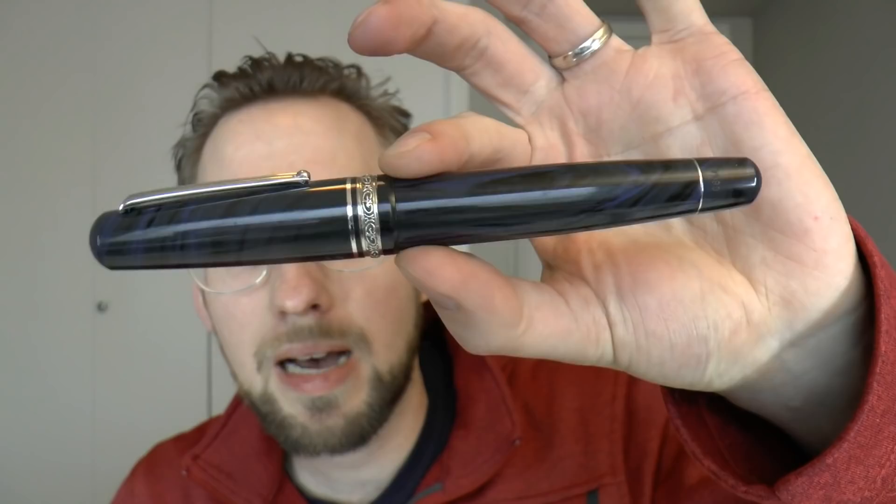And what he showed me was this - Delta Roma Imperiale. Beautiful pen. Ebonite, large, oversized, number eight nib, piston filler. Ticks all the right boxes.